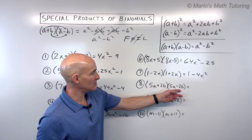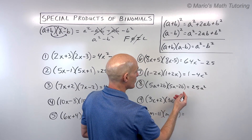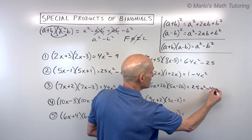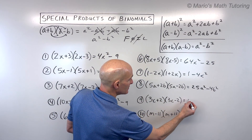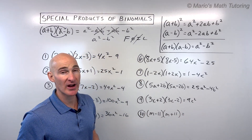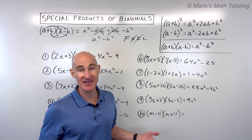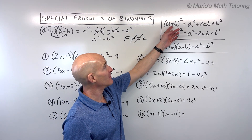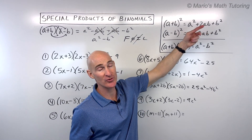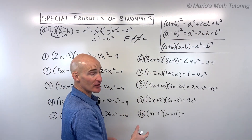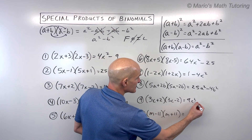Number eight is a sum and difference pattern: same two terms, one plus and one minus. 5a times 5a is 25a squared, and 2b times negative 2b is negative 4b squared. For number nine, 3c times 3c is 9c squared. A caution: don't apply the sum and difference shortcut when you have a plus b times a plus b — that's not a sum and difference pattern; it has a middle term 2ab. Then last times last gives negative 4.